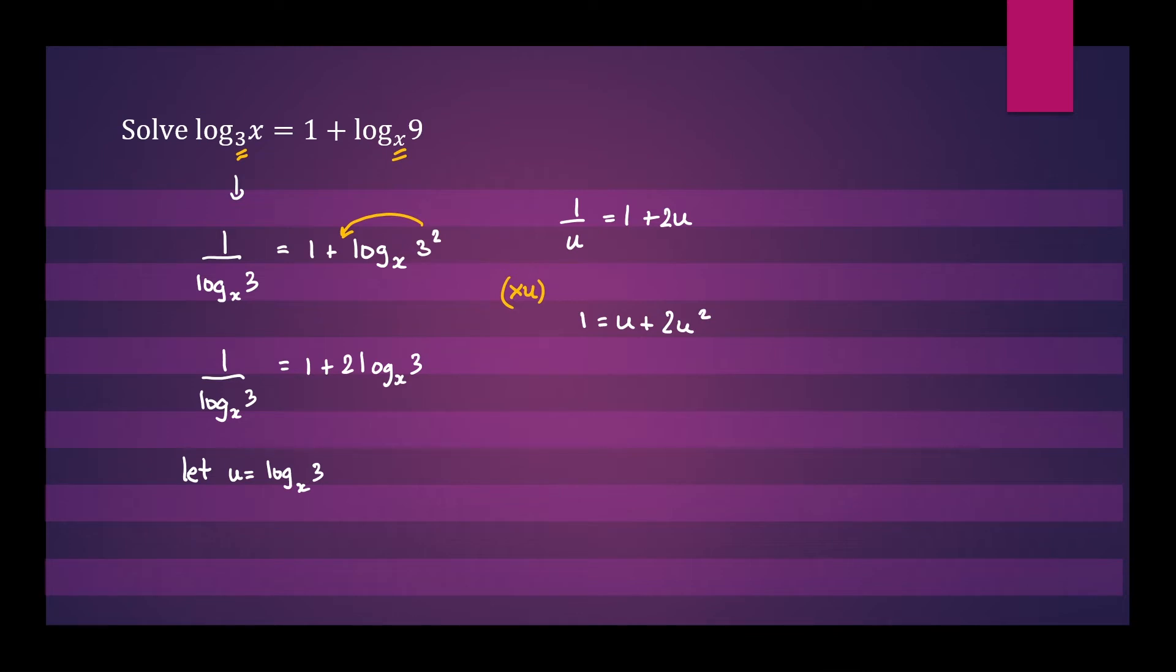So you can see now we have a quadratic equation. Let's rearrange it. We'll have 2u squared plus u minus 1 equals 0.